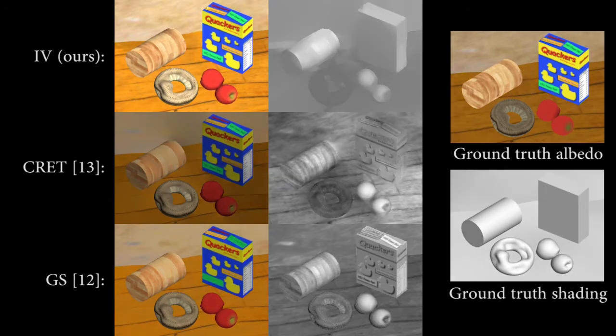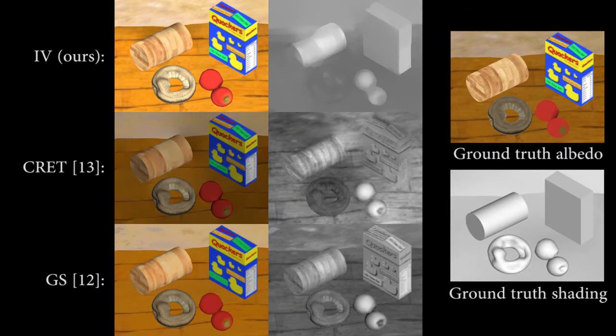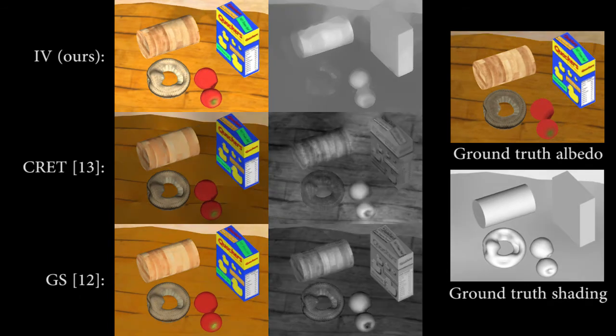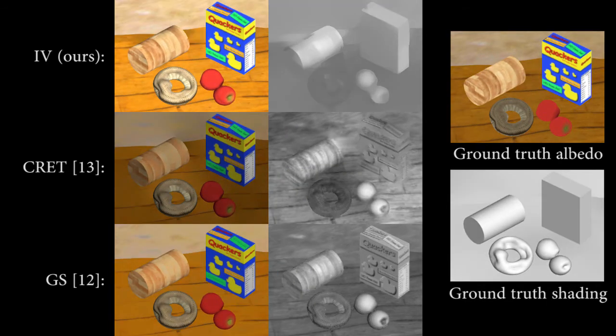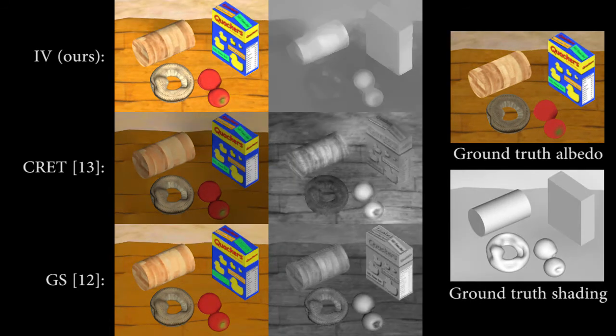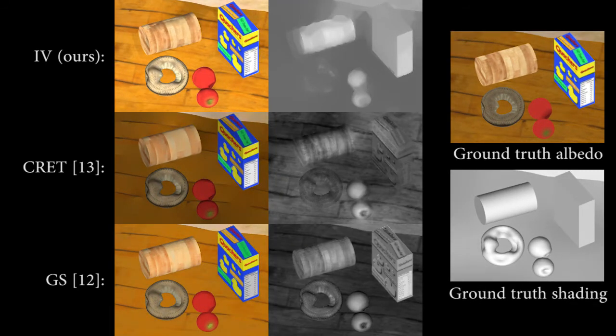We compare our intrinsic video method, called IV here, with previous methods denoted as CRET and GS. CRET is a Retinex model, while GS uses a global sparsity prior. Both of these methods put too much high-frequency albedo information into the shading image.